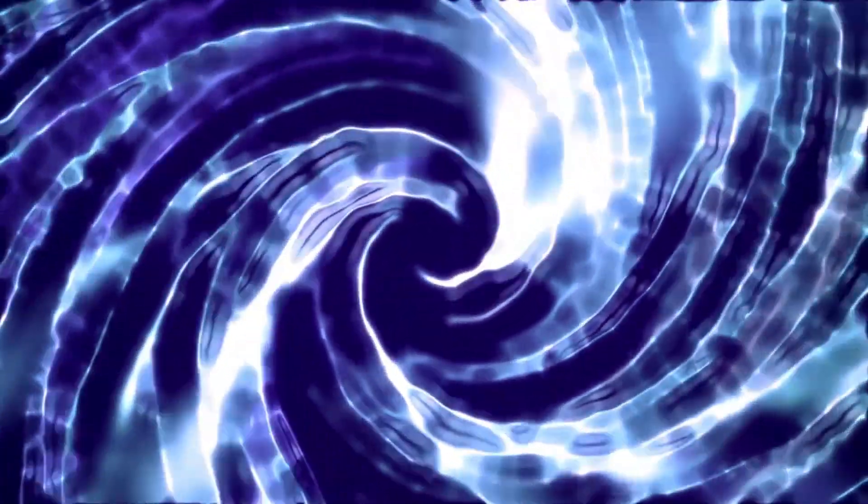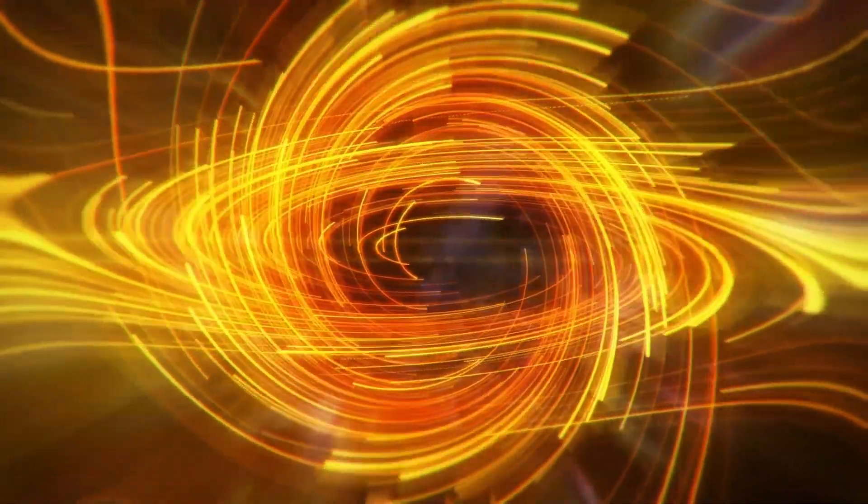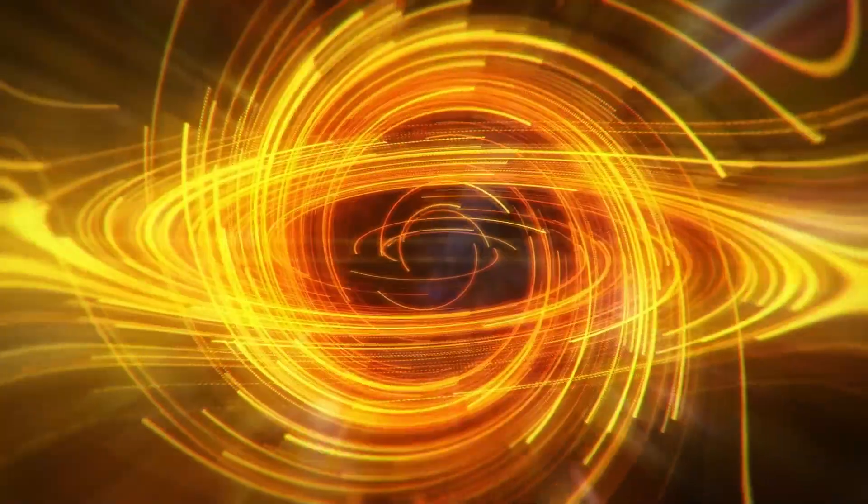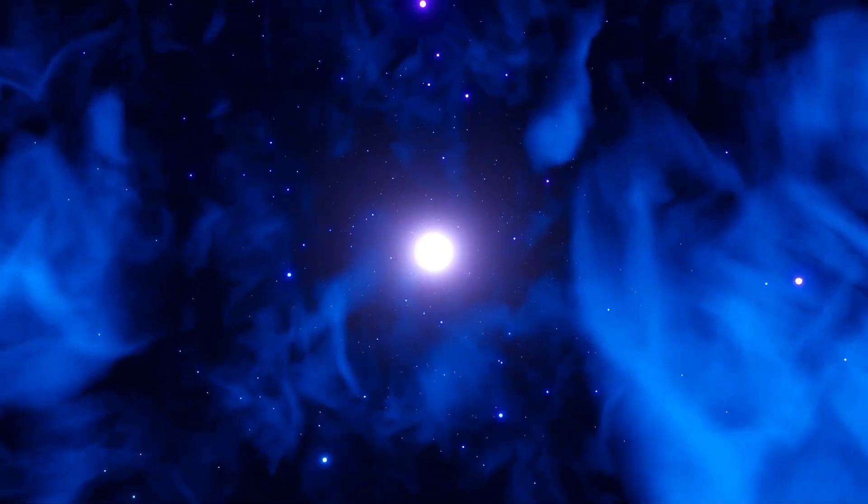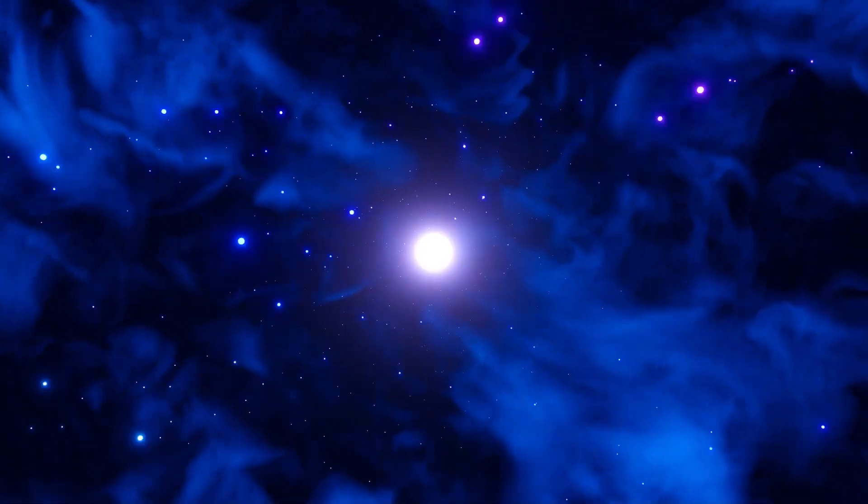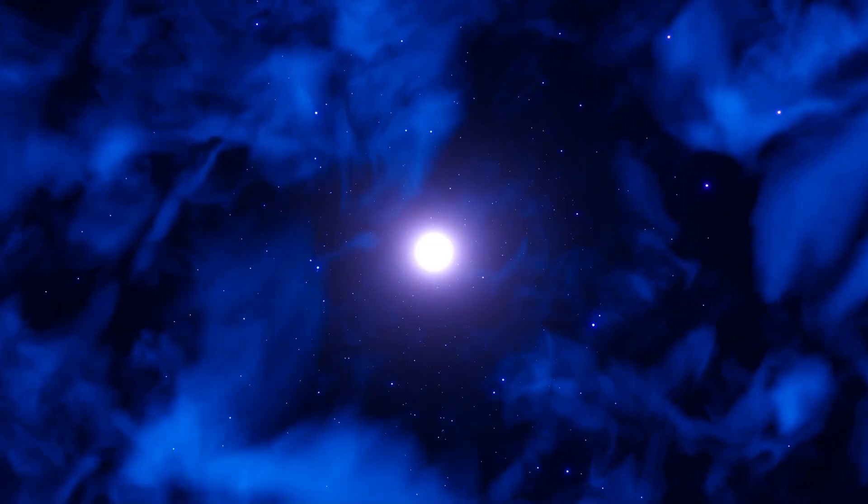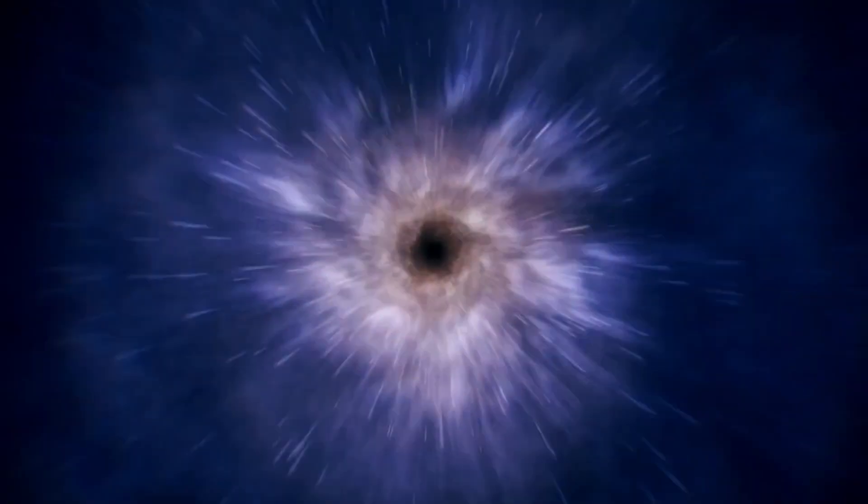The first layer is called the event horizon, which marks the point beyond which nothing can return. Once an object crosses this boundary, it is inevitably drawn toward the black hole. The second layer is known as the photon sphere, where light is trapped in orbit. Any light that enters this region is caught in the black hole's gravitational grip and cannot escape. Finally, the third layer is the singularity, where matter is crushed down to a single point in spacetime, creating an environment where the laws of physics as we know them cease to function.